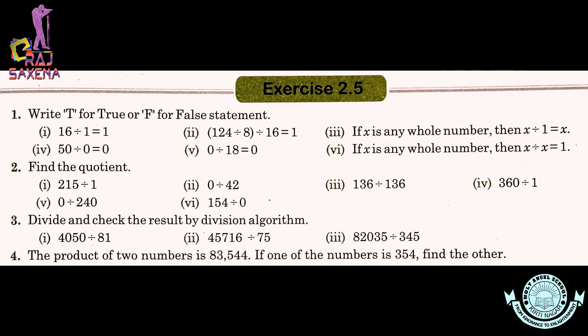Now question number 2 — Find the quotient. Number 1: 215 divided by 1. Number 2: 0 divided by 42. Number 3: 136 divided by 136. Number 4: 363 divided by 1. Number 5: 0 divided by 240. Number 6: 154 divided by 0. Now question number 3 — Divide and check the result by division algorithm. Number 1: 4050 divided by 81. Number 2: 45716 divided by 75. Number 3: 82035 divided by 345.